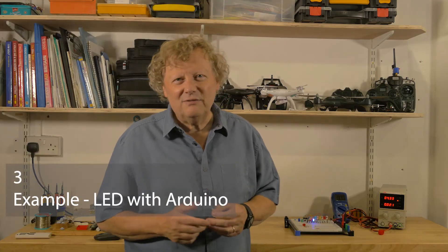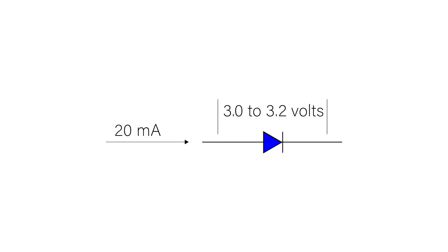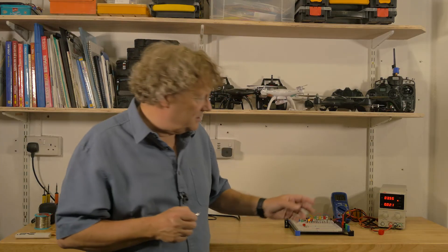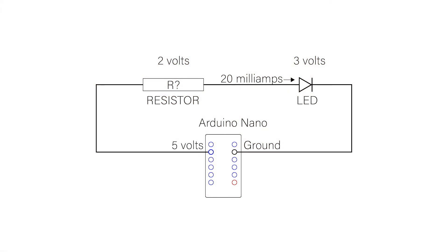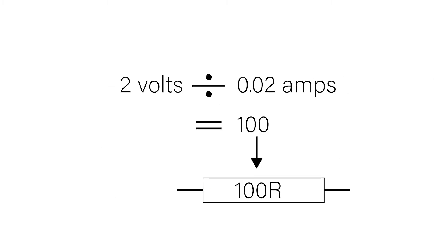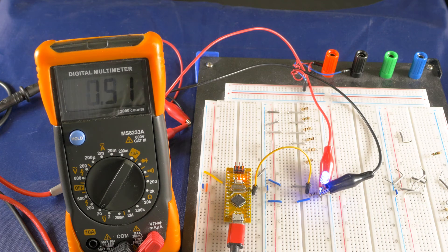Now let's try another example. Here's a blue clear 5 millimeter LED. The specifications say 3 volts to 3.2 volts at 20 milliamps. This time I'm going to power it from a digital output from an Arduino board. The high voltage of the pin when triggered is 5 volts, so I need to lose around 2 volts. The calculation for the resistor will be 2 volts divided by 0.02 amps, which comes out at 100 ohms — a common resistor size. And here it is, once again everything looking good with the measurements in the correct range.